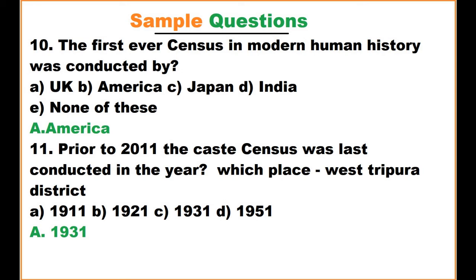Prior to 2011, the caste census was last conducted in which year? The options are 1911, 1921, 1931, and 1951. The answer is 1931. The place where the 2011 caste census was conducted is West Tripura district.